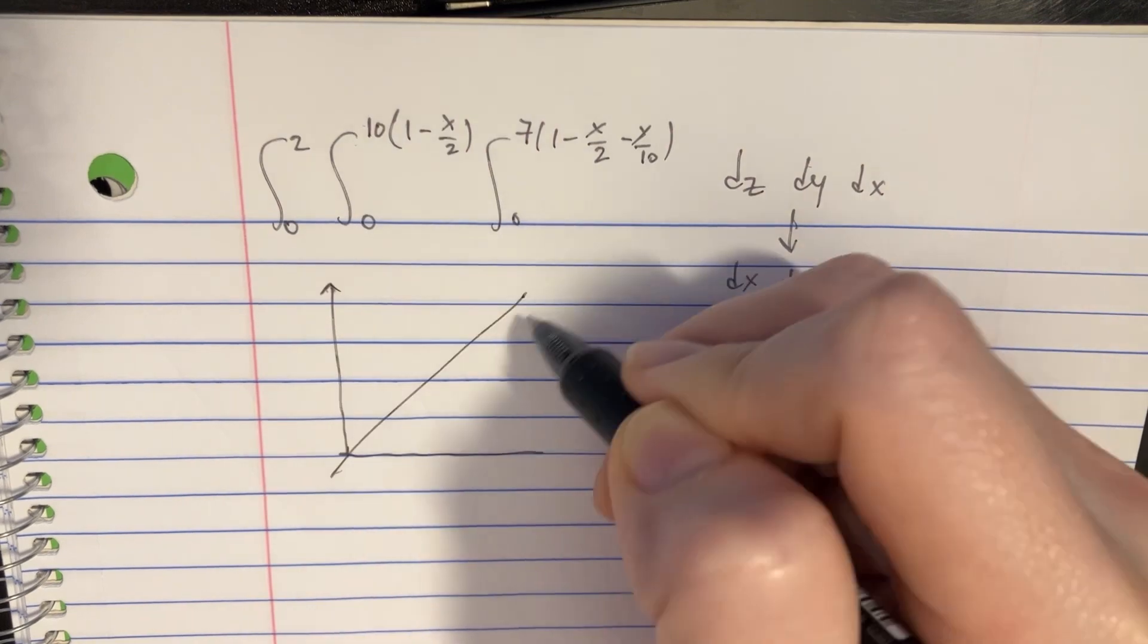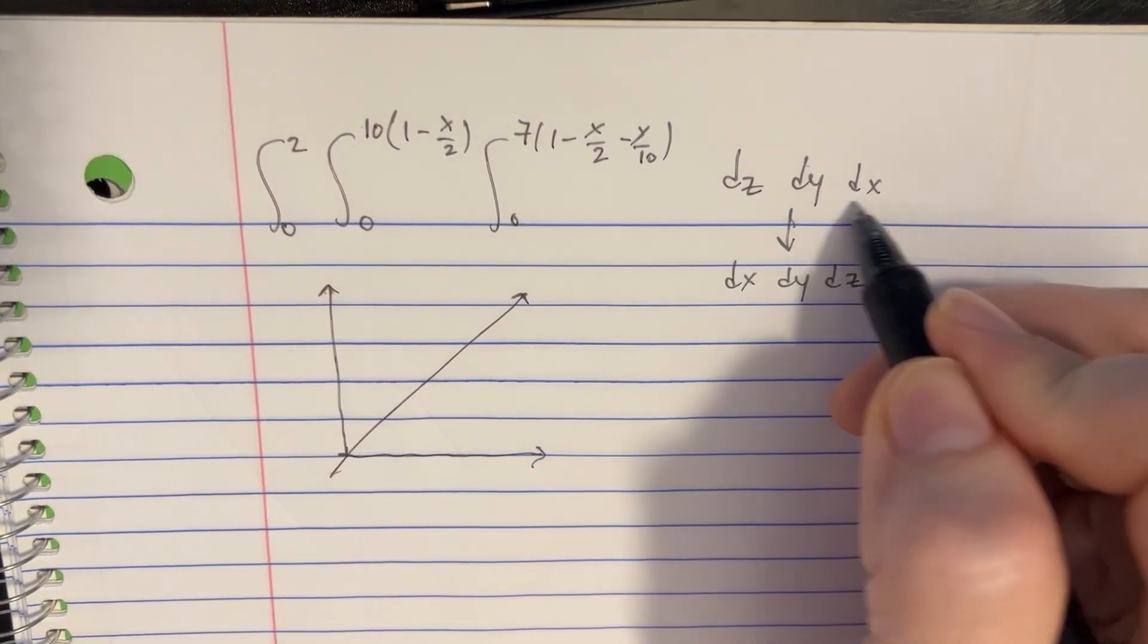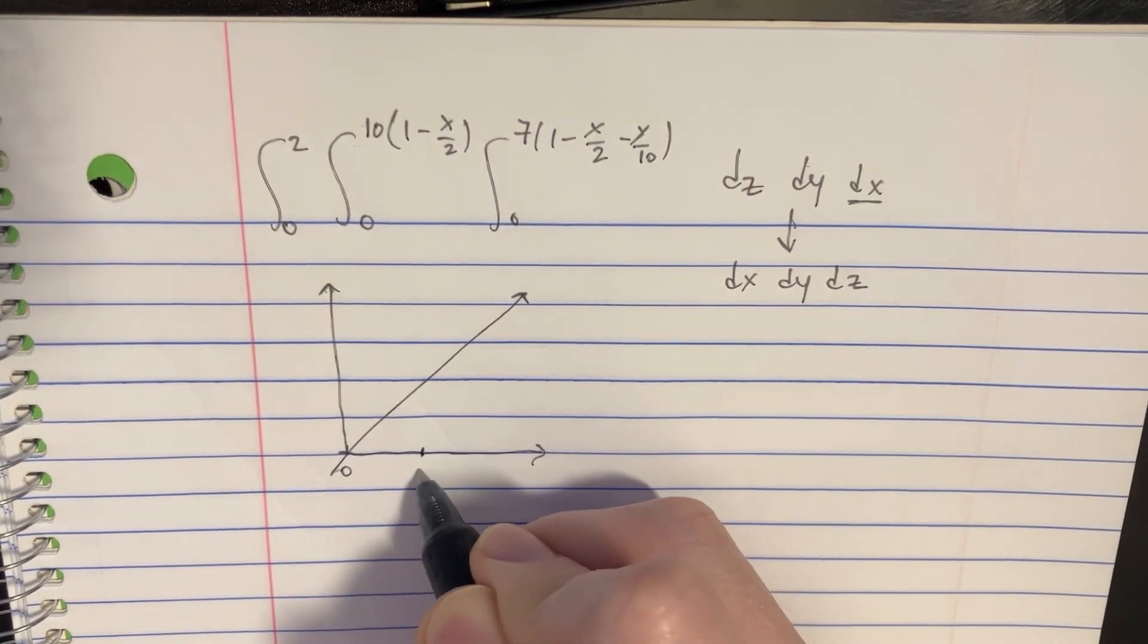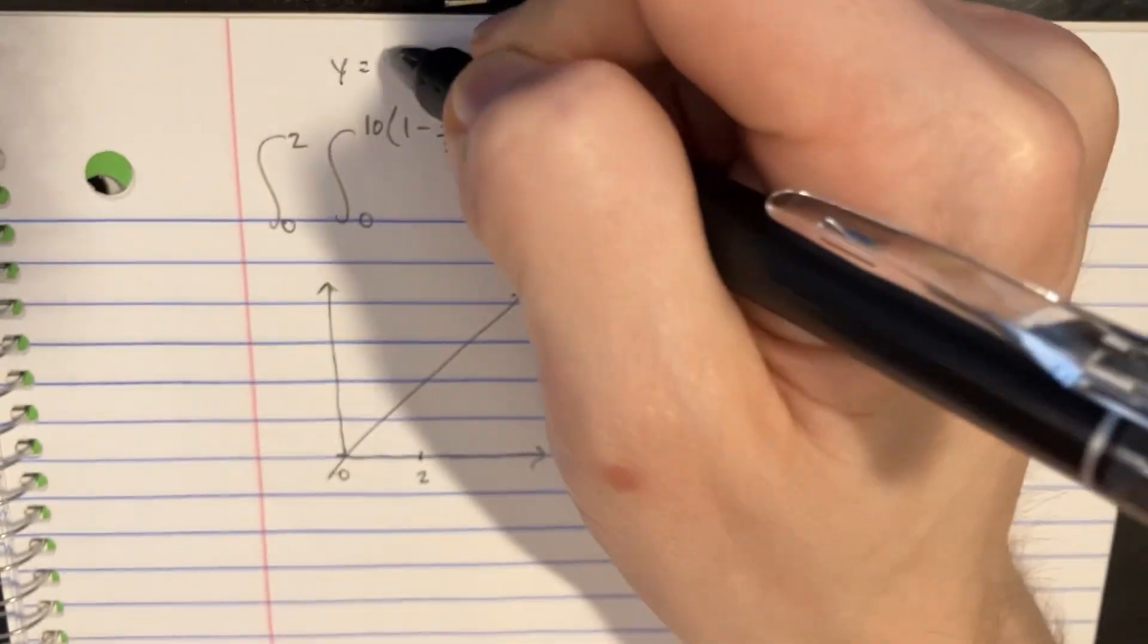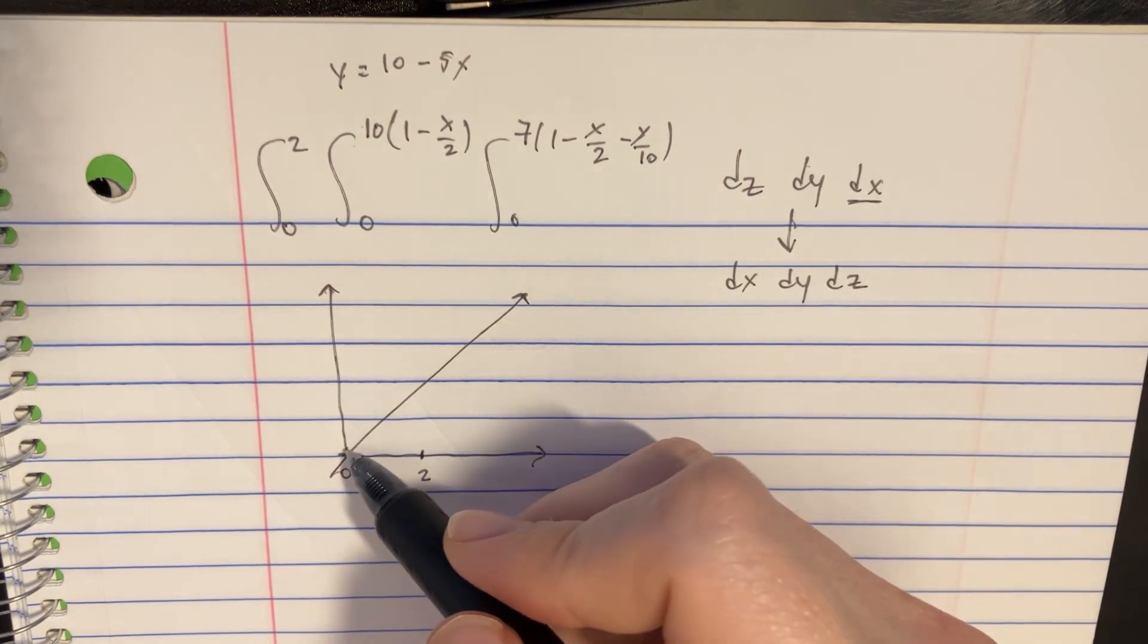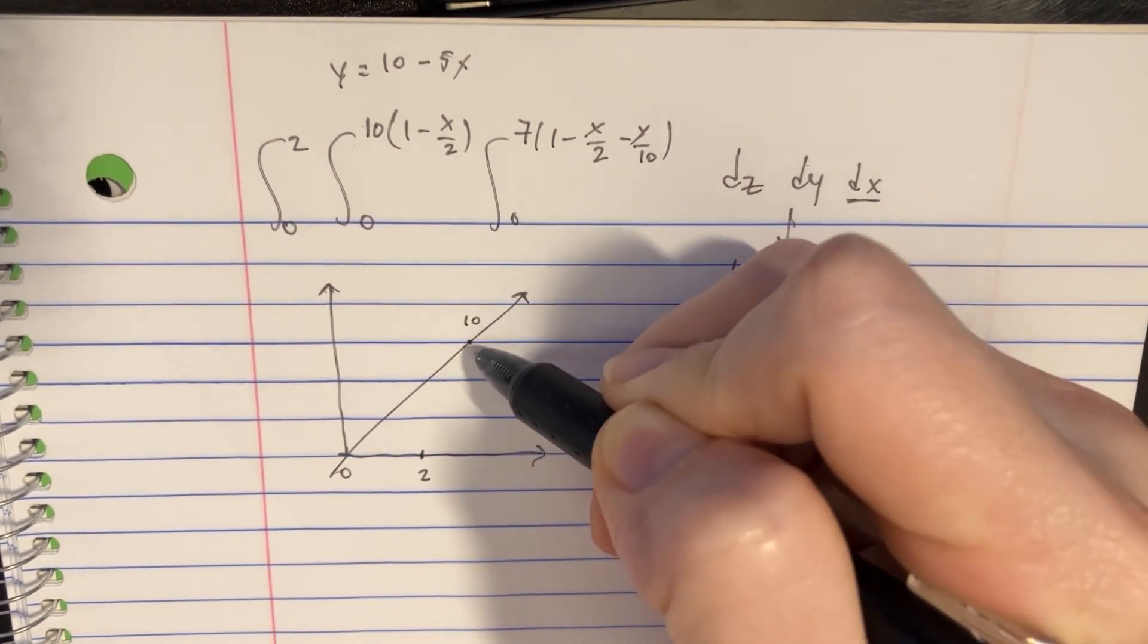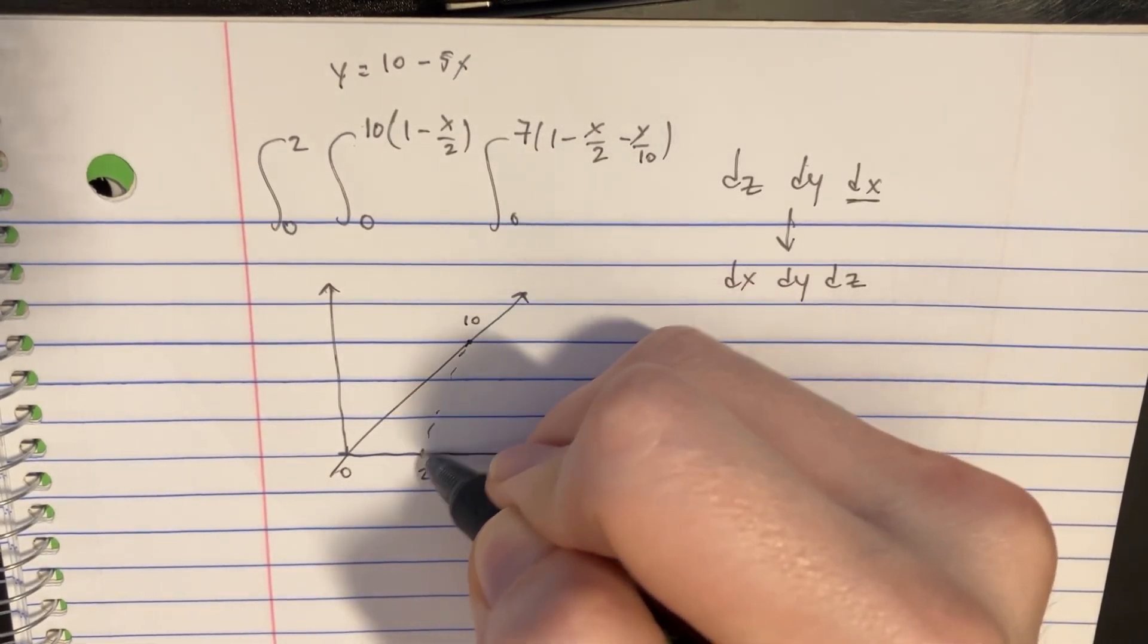There's the y-axis over there. So first, we'll notice that dx goes from 0 to 2. There's really not much we could do about that, so we'll start there. Then we can go over this equation y equals 10 minus 5x, which will give us, if x equals 0, y is 10. And then if x equals 2, y is 0. So we can even connect these points here.